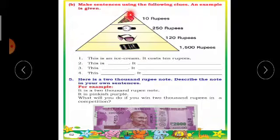Make sentences using the following clues. An example is given. Here they have given some pictures. If it is a pyramid, it is having some pictures and these are the cost of these things.